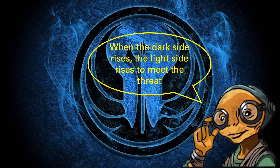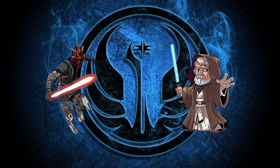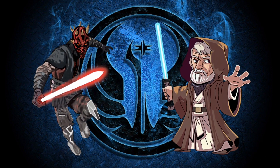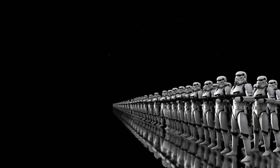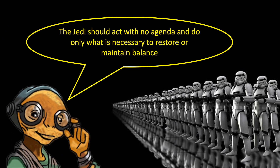When the immune system actually detects a threat, it will try to eliminate it to restore balance or homeostasis. This is the same as when the dark side starts to gain in strength — for example, the emergence of Palpatine's apprentice Darth Maul, and the light side becoming aware of this threat and sending Obi-Wan to meet it and try to eliminate it. What's really important to remember here is that, just like the Jedi Order, the immune system is designed to be a peacekeeper and should only do what is necessary to restore or maintain balance without any agenda of its own — that is, it should only try to repair or eliminate a threat.